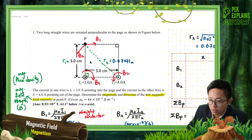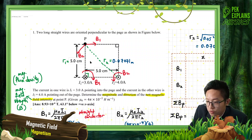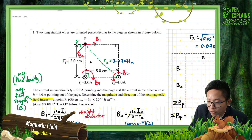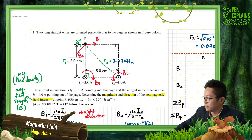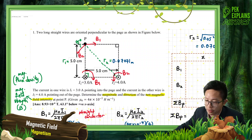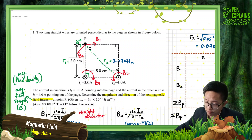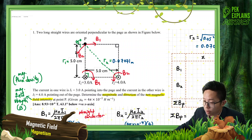Since I2 is at 45 degrees relative to point P, both sides are 5 cm, giving us a 45-degree angle. So B2 acts at 45 degrees — left and downward. B1 is already in the X component direction, going to the right.